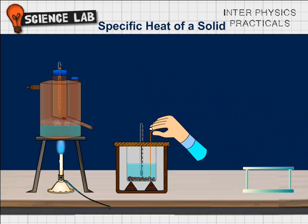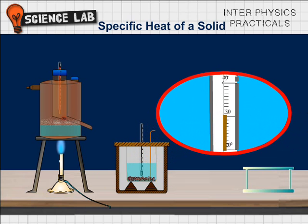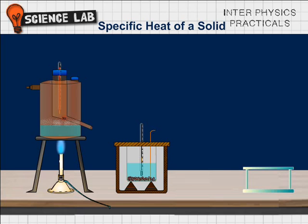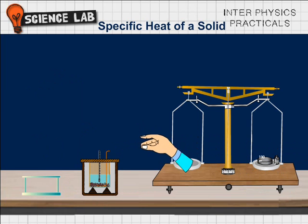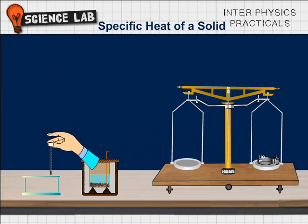Measure the mass of the calorimeter with the contents W3. Mass of the calorimeter with the contents W3 is 102 grams.